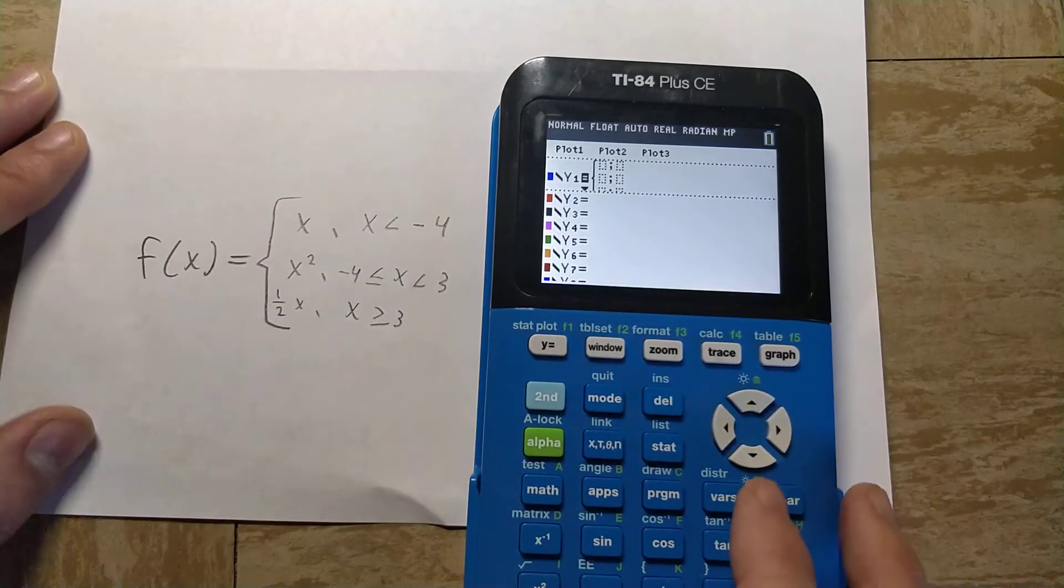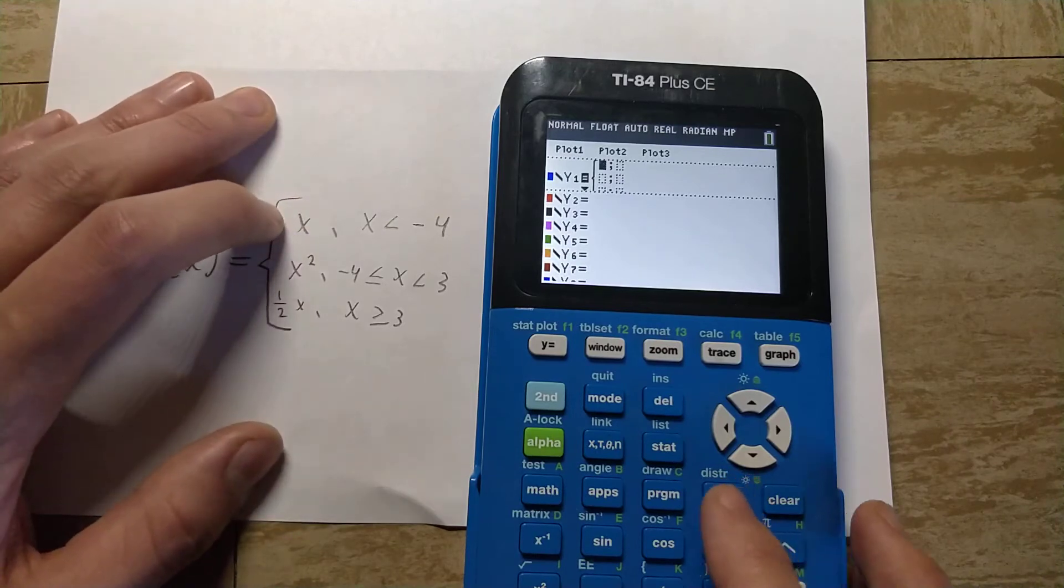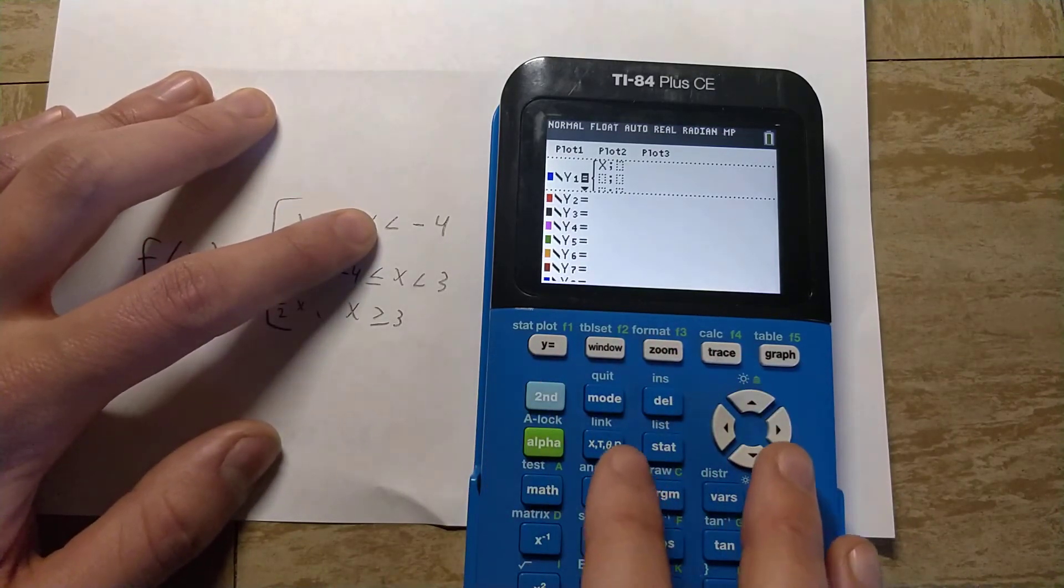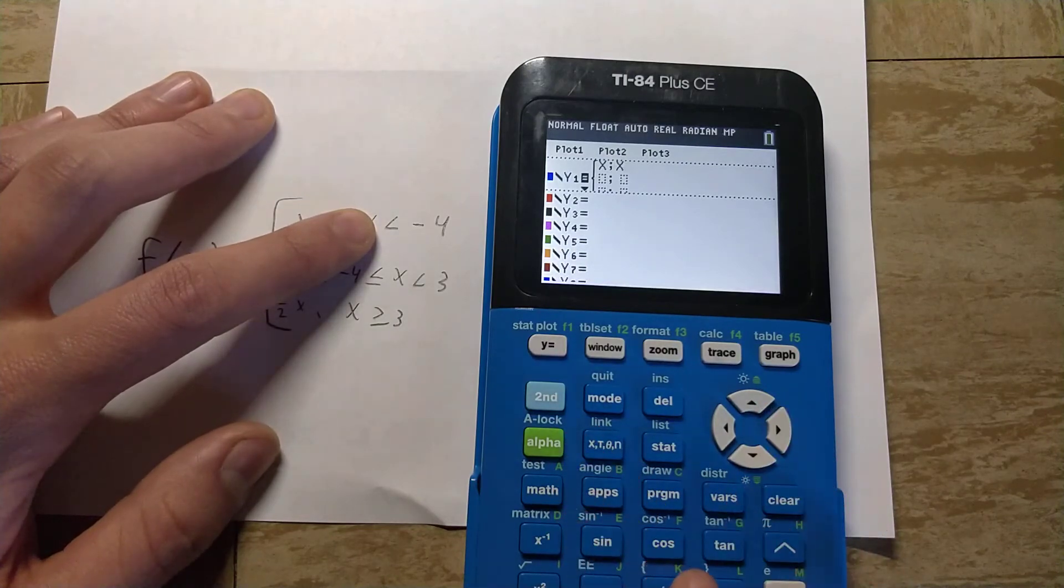It will give us a template here with three pieces. For the first one, we just have x, so let's press the x key. Then to type in x is less than negative four, we would just type in x.